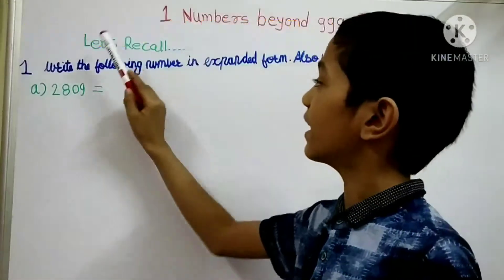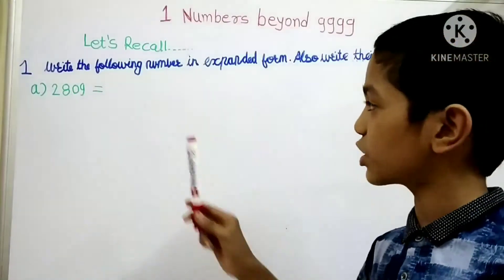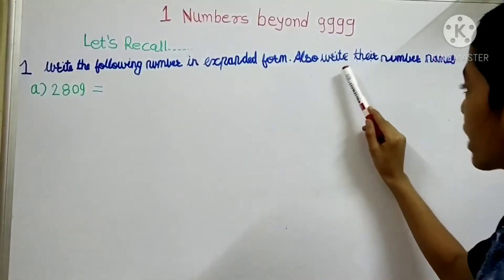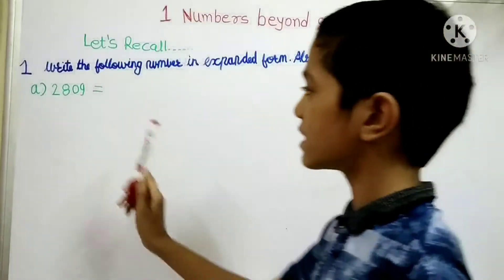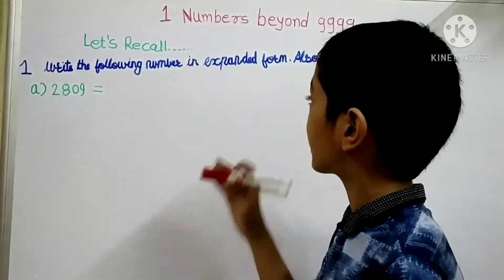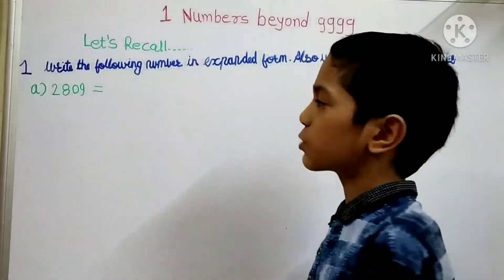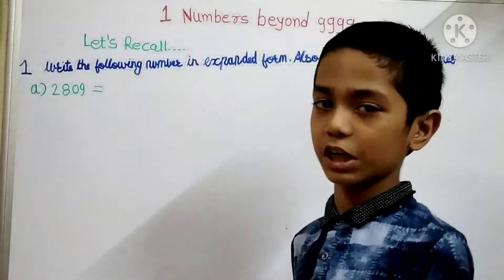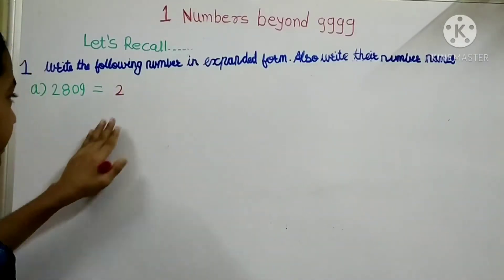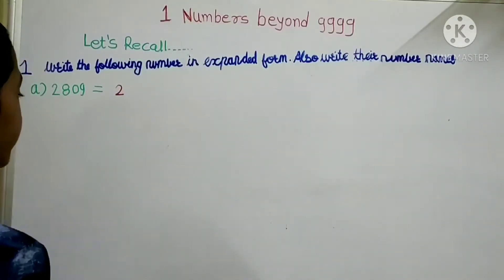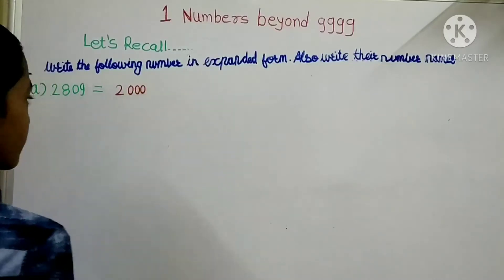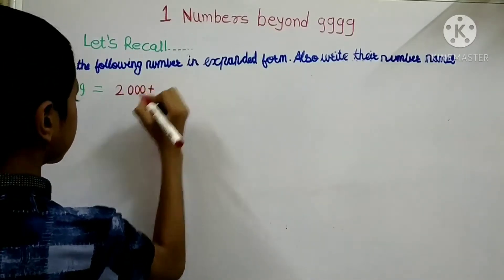First, we will do the last recall. The first question is: write the following number in expanded form and also write their number name. The first number is 2809. The easiest way to write the expanded form is to put zeros. First number is 2 — write it as it is, then after the 2 there are 3 numbers, so we will put 3 zeros, and then put a plus sign.